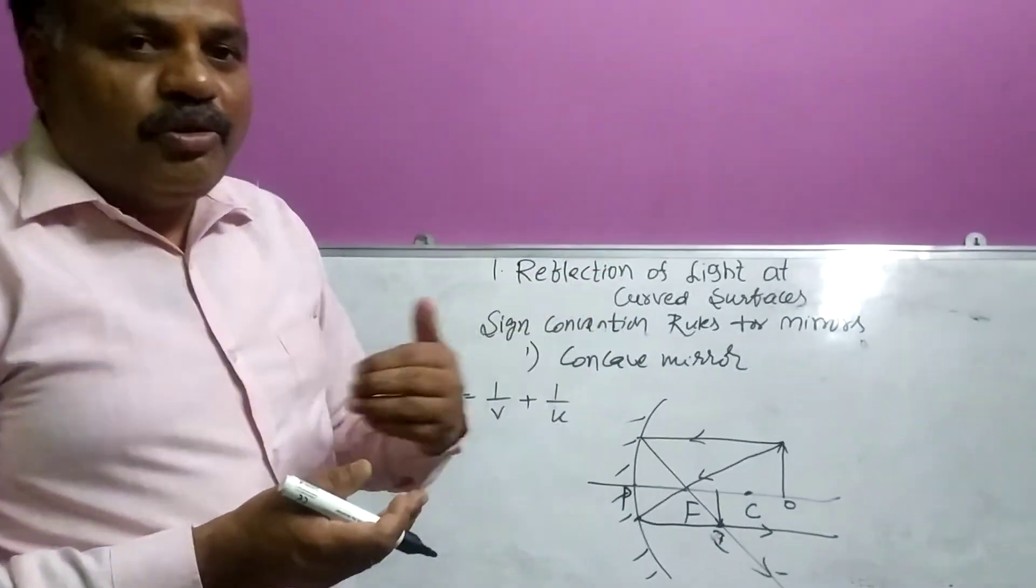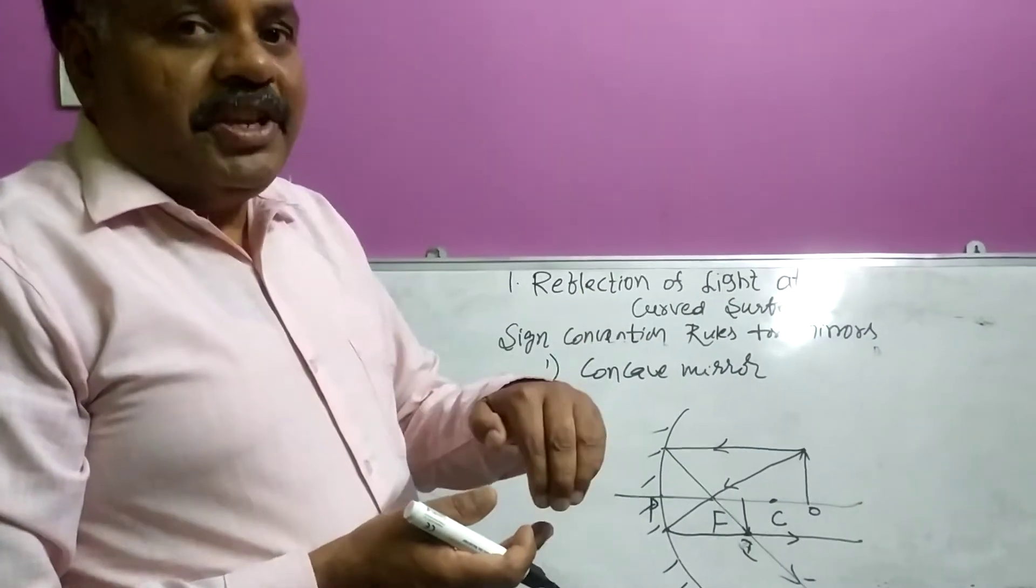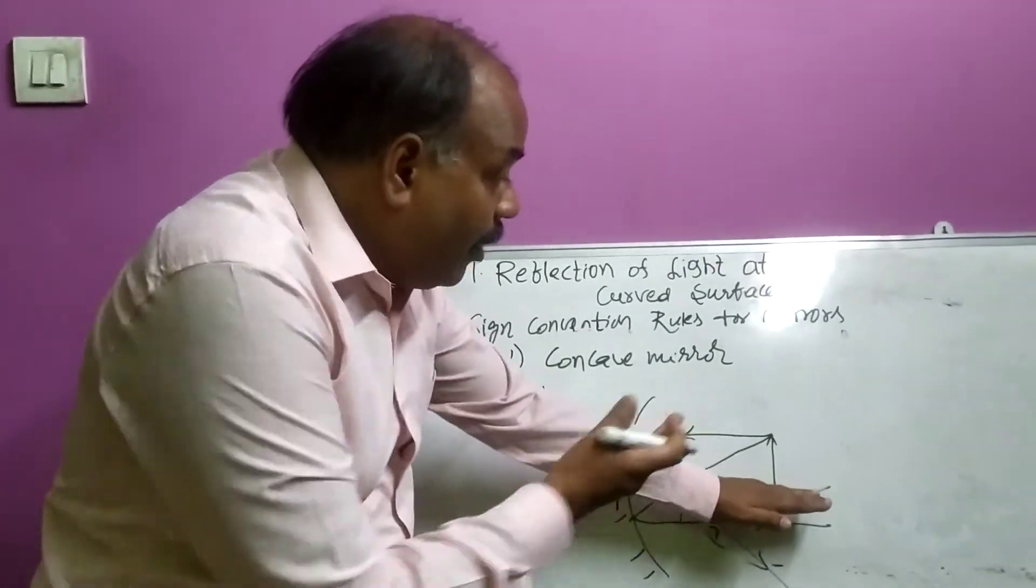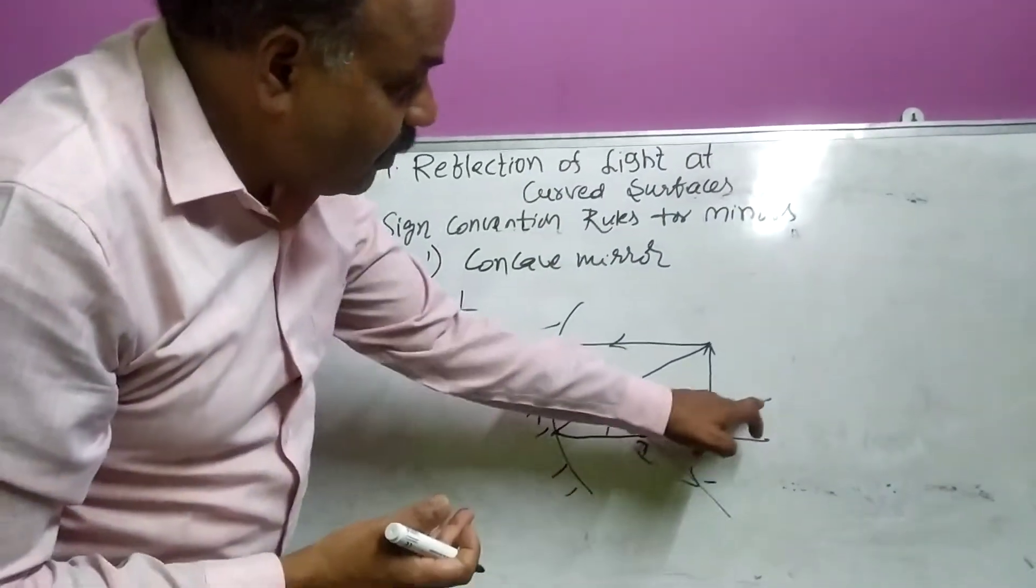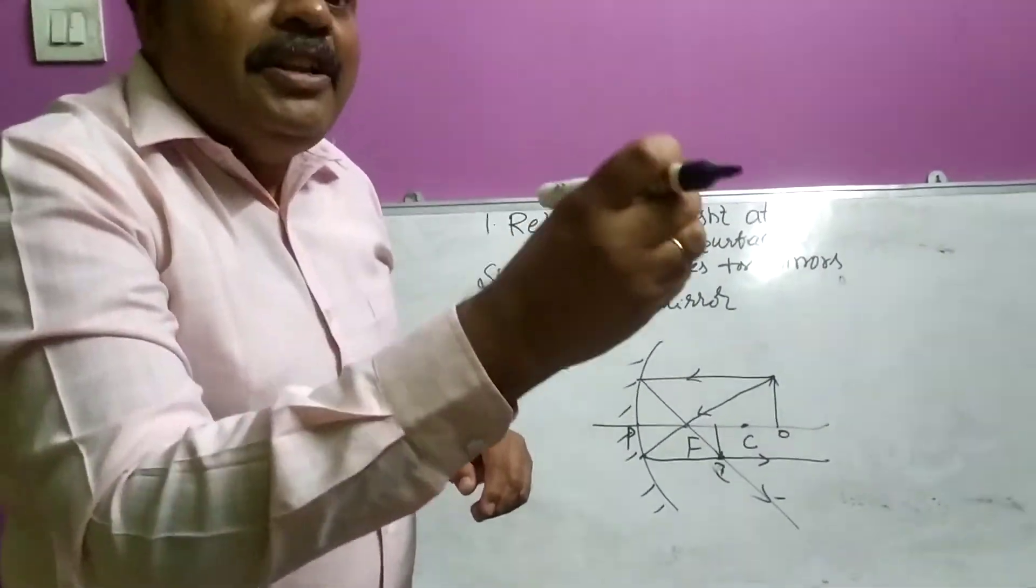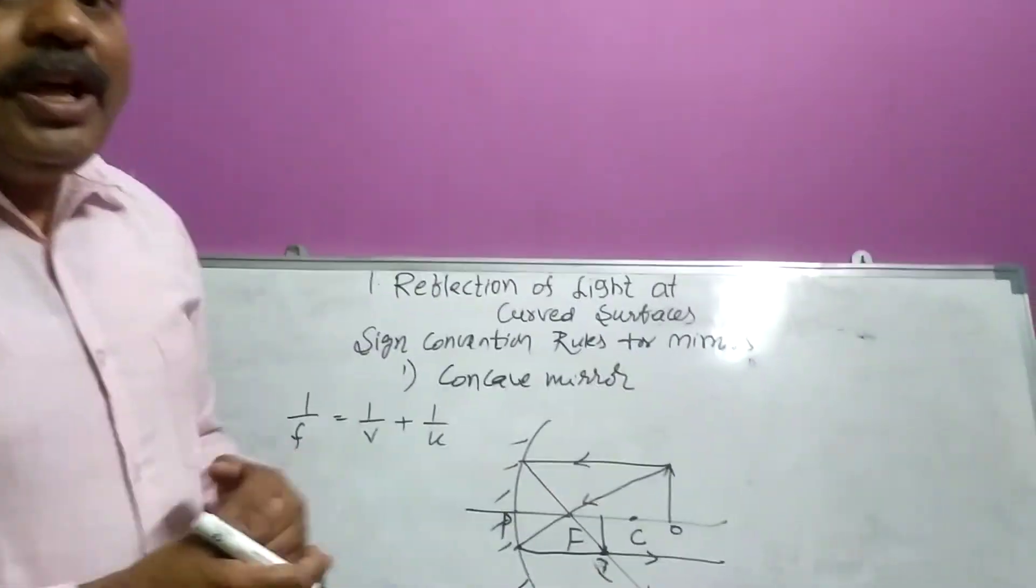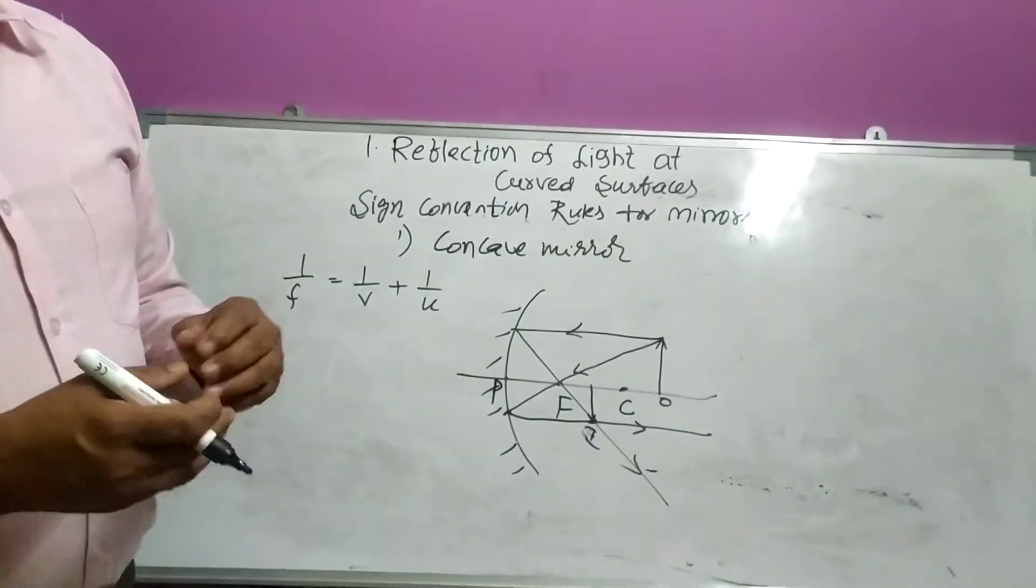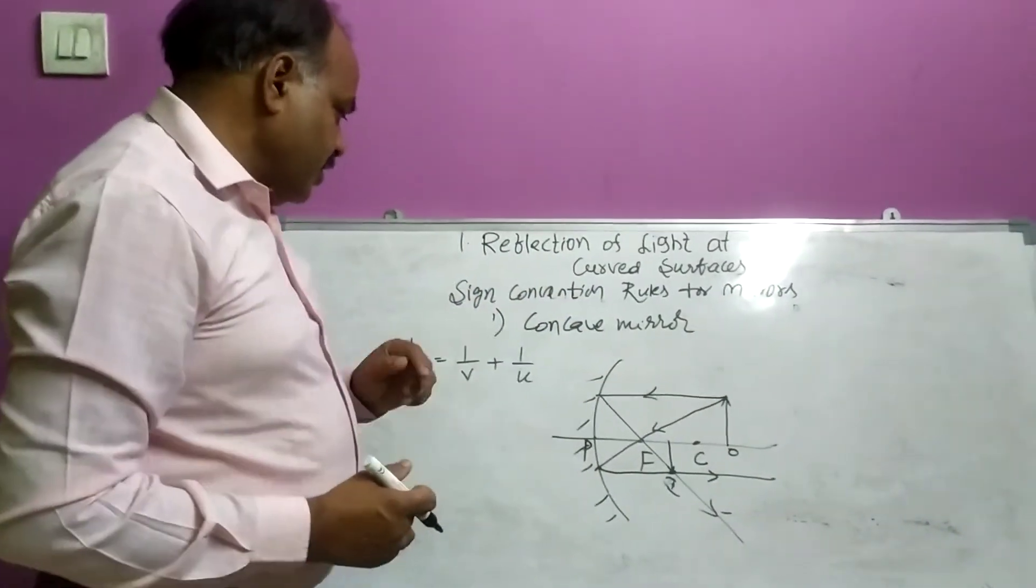Third rule, height of the object and height of the image. If they are above the principal axis, upward direction to the principal axis, value will be taken as positive. If they are below the principal axis, they will be taken as negative. Now, apply these three rules.